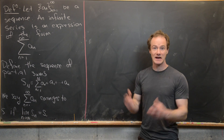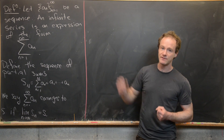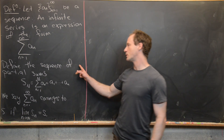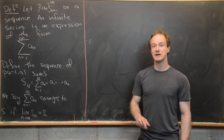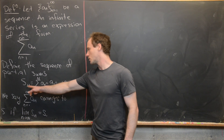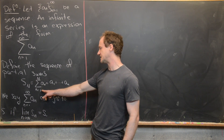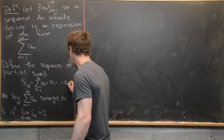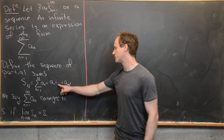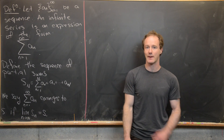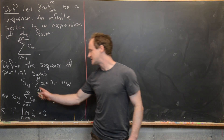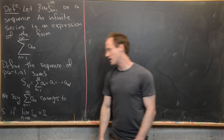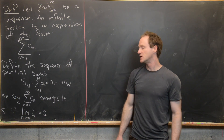Obviously, this sum may not exist sometimes — it might be infinite — so we need to control for that. We can do that by something called the partial sums. We want to define a companion sequence called the sequence of partial sums, denoted S sub capital N, which is the sum as n goes from 1 to capital N of a sub n — in other words, the sum of the first capital N terms: a_1 plus a_2 all the way up to a capital N. We say that our infinite series converges to s if the limit of the sequence of partial sums converges to s.